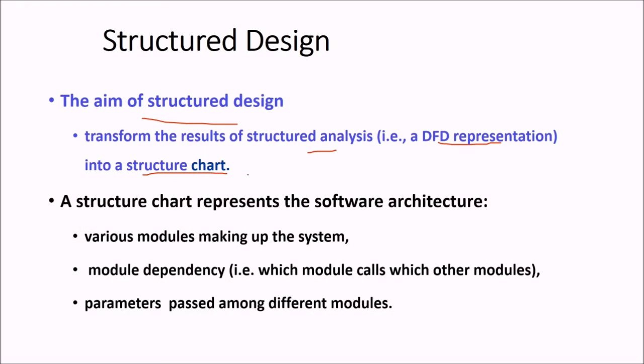So a structure chart represents or shows your software architecture. So various modules making up the system, the dependency or the relationship between the modules, which module is going to call which module and which module is going to be called by which module. The message passing, that means parameters passed among different modules. This is what the structure chart is all about and it shows your software architecture.